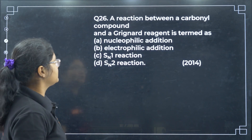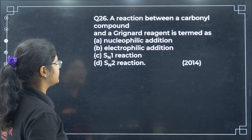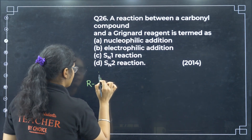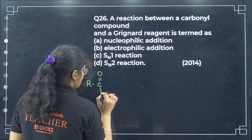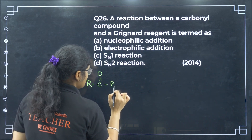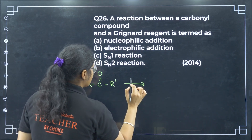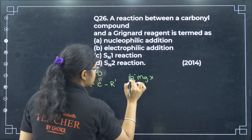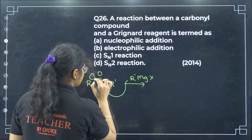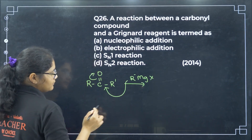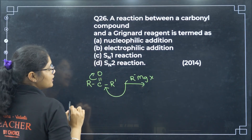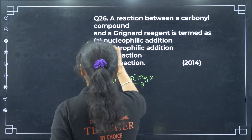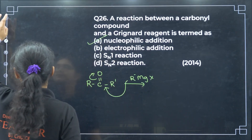A reaction between a carbonyl compound and a Grignard reagent: the R⁻ from the Grignard reagent attacks the carbonyl carbon as a nucleophile. This is called a nucleophilic addition reaction — option A.